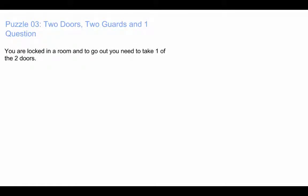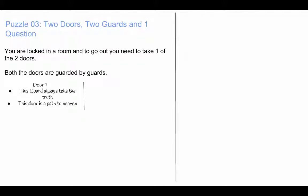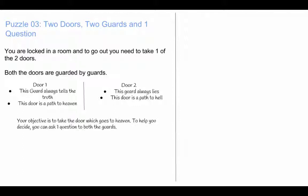You are locked in a room and to go out you need to take one of the two doors. Both the doors are guarded by guards. Guard at the door one will always tell you the truth. This door is the path to heaven. The guard at the door two will always lie. And this door is the path to hell.